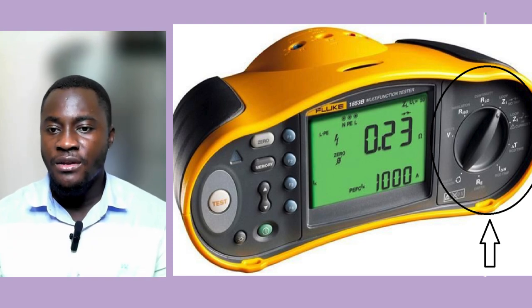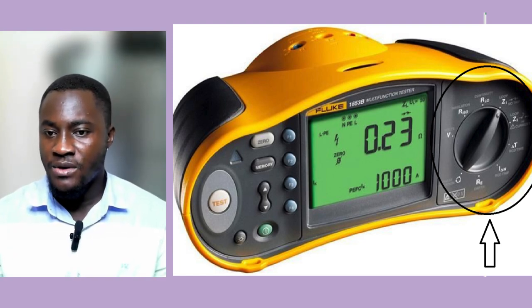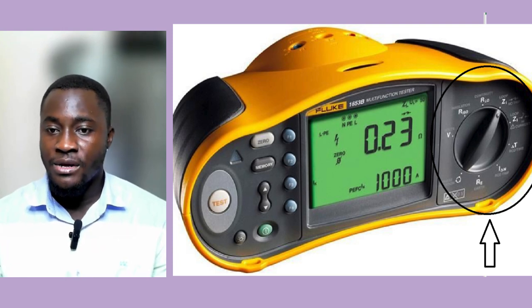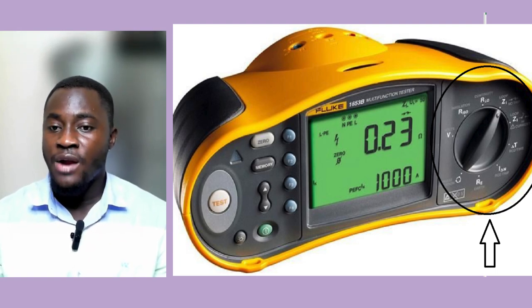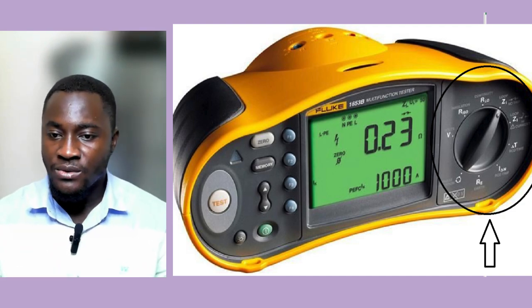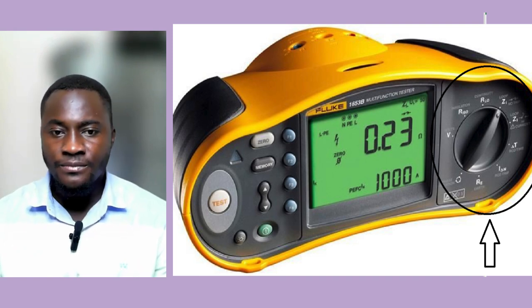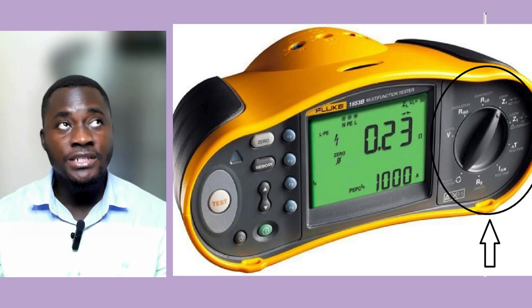We have continuity, loop impedance, and loop impedance with no-trip mode. We also have RCD time, which is the time measurement, and RCD trip current. In this case, we are going to use the no-trip section — selecting the no-trip mode. We will be selecting the appropriate range for each test, which is very important. For the earth fault loop impedance test, we will be selecting the impedance range of the multifunctional tester.